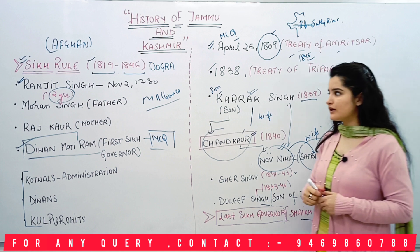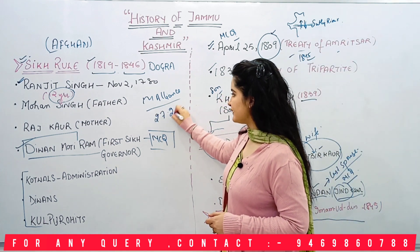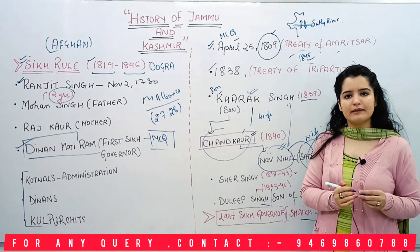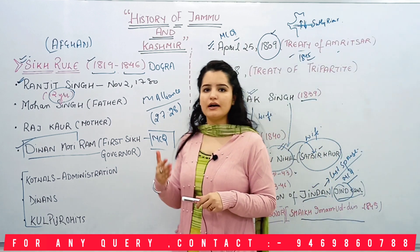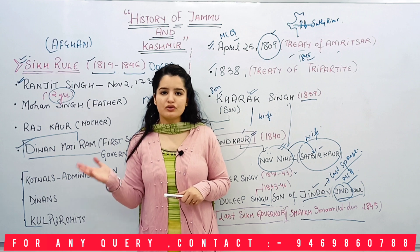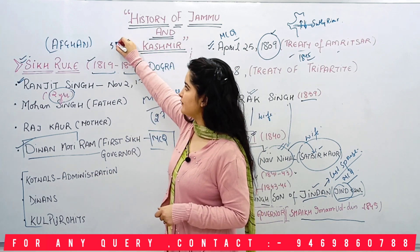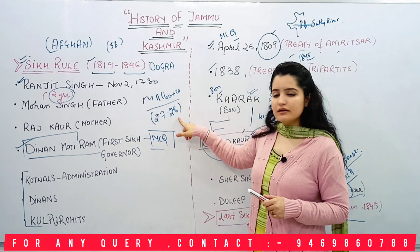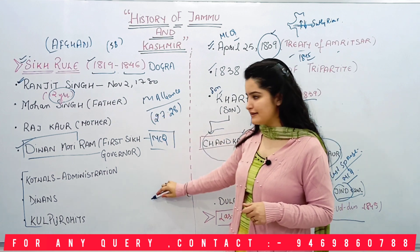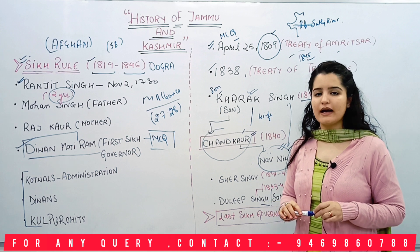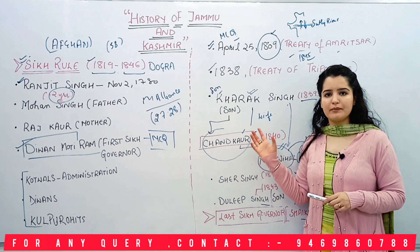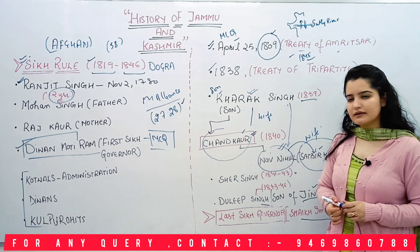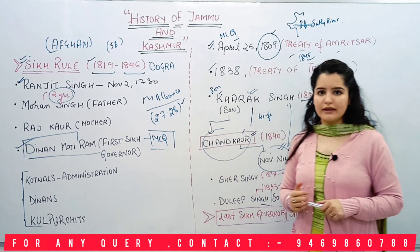So that was all of the Sikh rule. The Sikh rule lasted 27 to 28 years, unlike the Afghan rule. The Afghan rule had two periods: a short period of about 5 months, during which the governor was Abdullah Khan, and then a longer period of 57 to 58 years, with governor Nuruddin. The main problem of the Sikh rule was the matrimonial alliances — many wives and children led to conspiracies and murders. After 27 to 28 years, the Dogra rule entered Jammu and Kashmir.